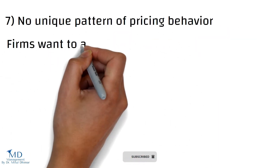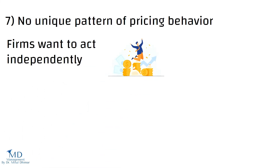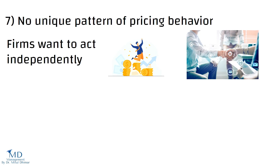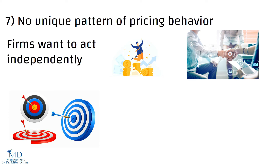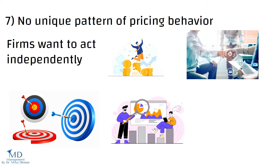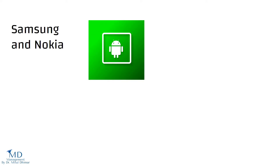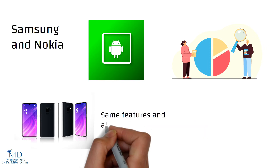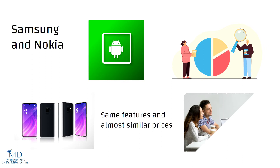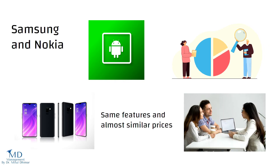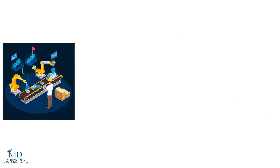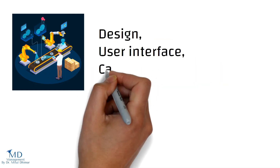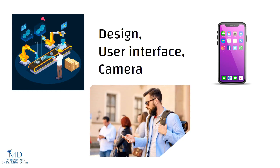Seventh, no unique pattern of pricing behaviour. Under oligopoly, firms want to act independently and earn maximum profits on one hand, and cooperate with rivals to remove uncertainty on the other. Depending on their motives, situations in real life can vary, making predicting pricing behaviour among firms impossible. The firms can compete or collude, leading to different pricing situations. For example, Samsung and Nokia are two big players in the Android smartphone industry. Samsung tries to capture the market by keeping prices lenient, while Nokia offers phones with similar features and prices. Both brands consistently work on design, user interface, and camera to retain customers.